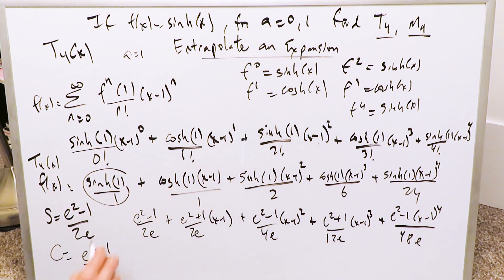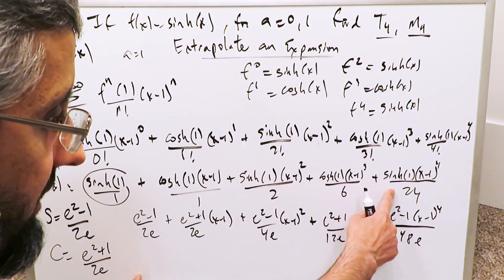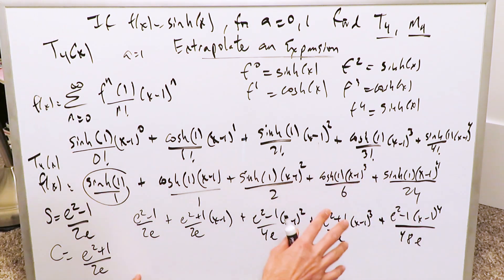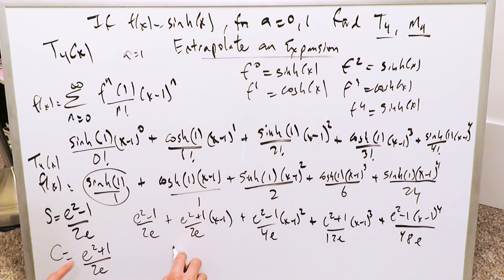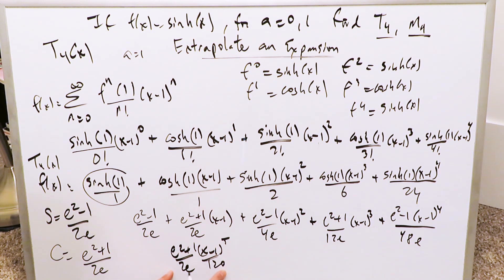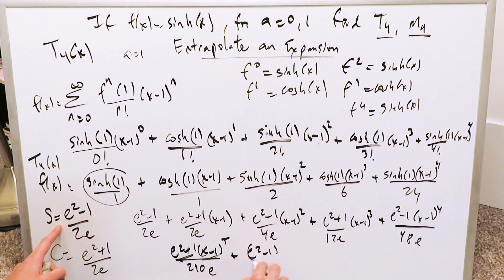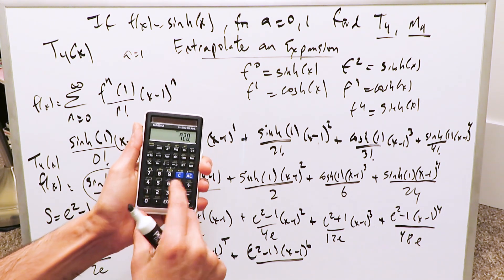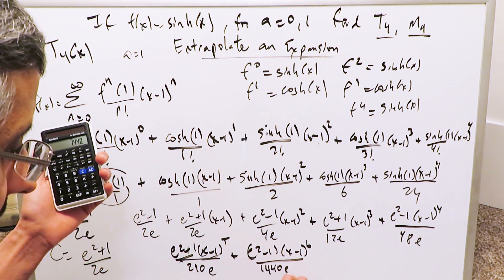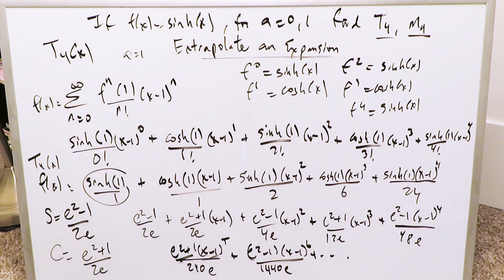Now, extrapolating an expansion — I can do it but won't go too far as there isn't space. At n equals 5, we shuffle to hyperbolic cosine, so the next term is e squared plus 1 divided by 240e, times x minus 1 to the fifth — since 2e times 5 factorial (120) gives 240e. At n equals 6, we shuffle back to sine: e squared minus 1 over 1440e, times x minus 1 to the sixth — since 2e times 6 factorial (720) gives 1440e. You can see how to continue extrapolating, but it's messy.